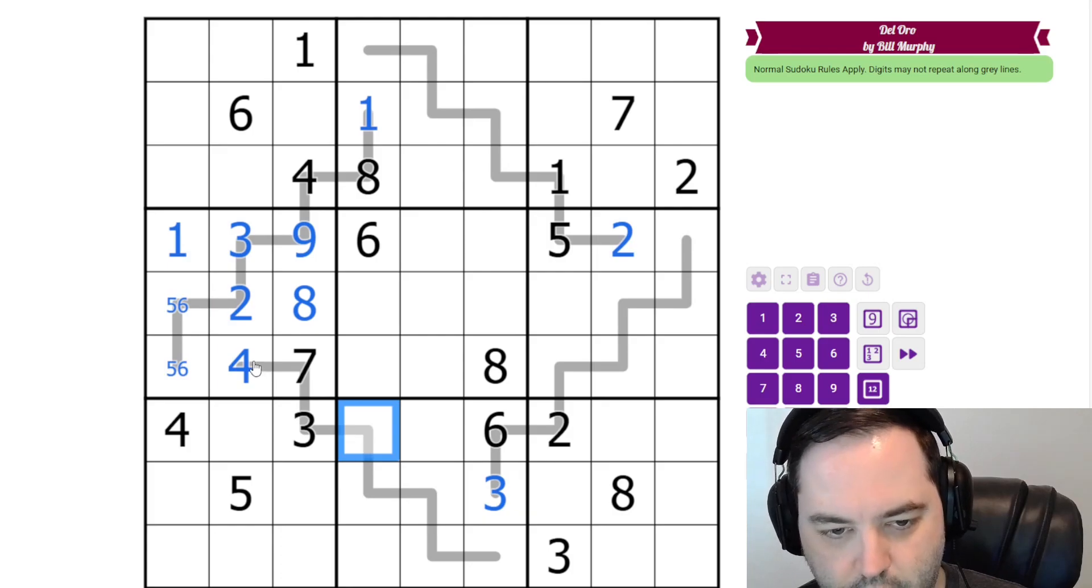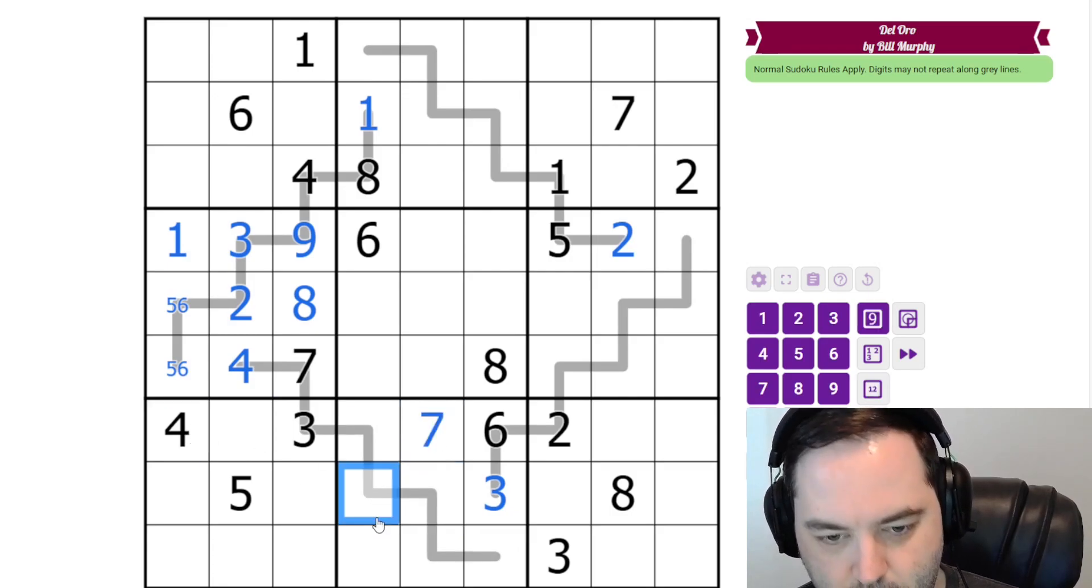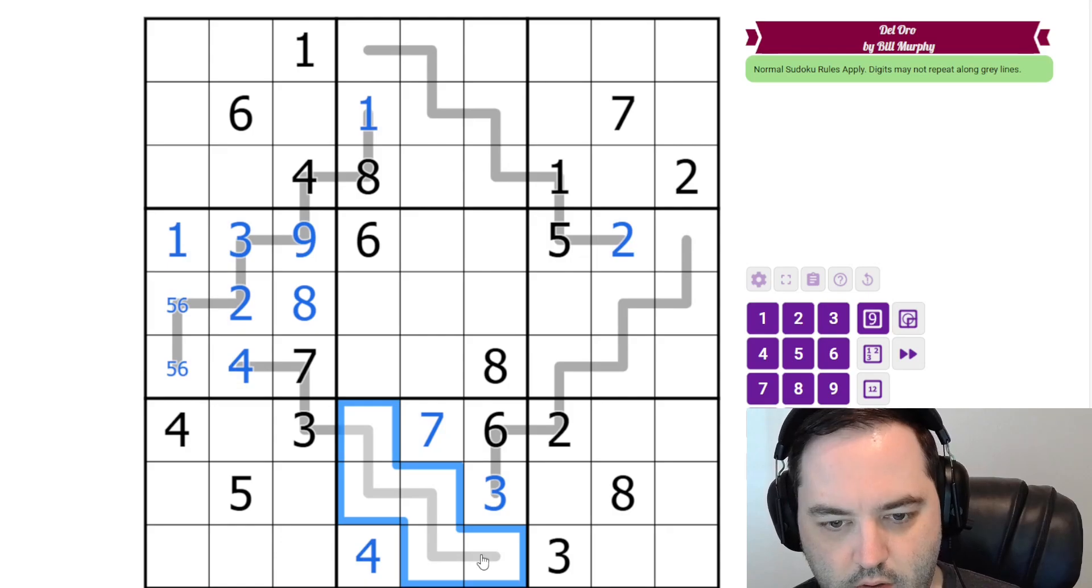We'll keep going around this way. We have 4, 7, 3, and 6, so these are the other digits. The 4 and 7 must go in these cells, and we have a 4 here. These are 1, 2, 5, 8, 9. And the 8 can't go in any of these cells, so it's going to go here.